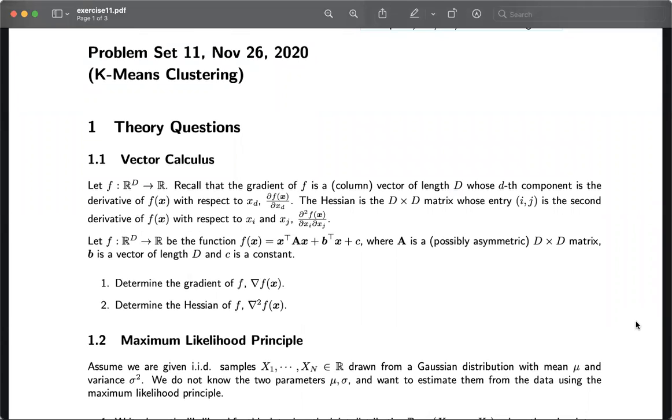In the first question, you have to determine the gradient and hessian of f with respect to x. I encourage you to write down f as a function of each element in x and find out the solution in this way.